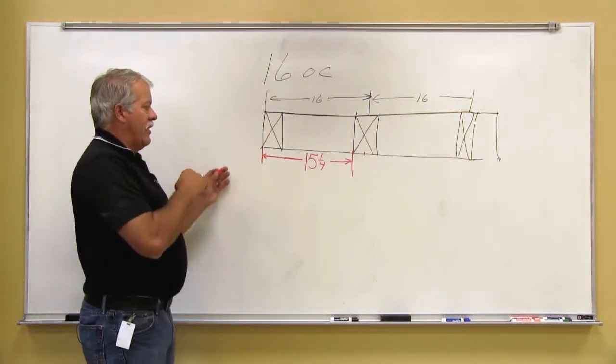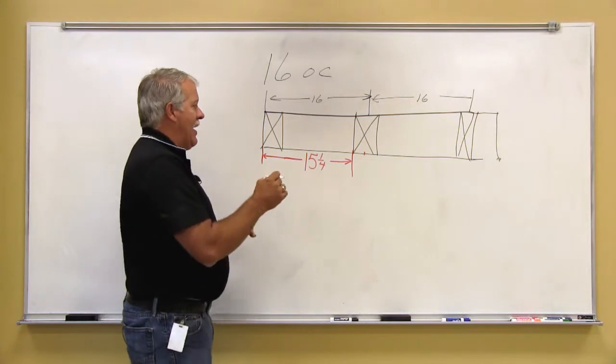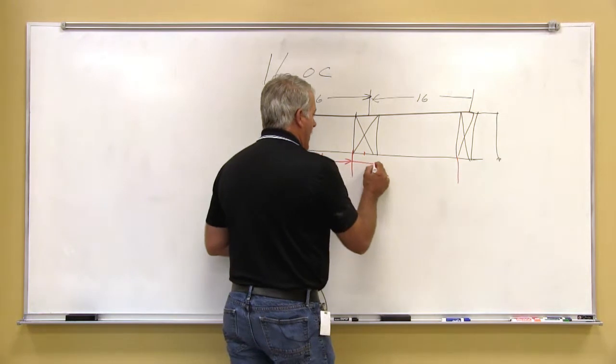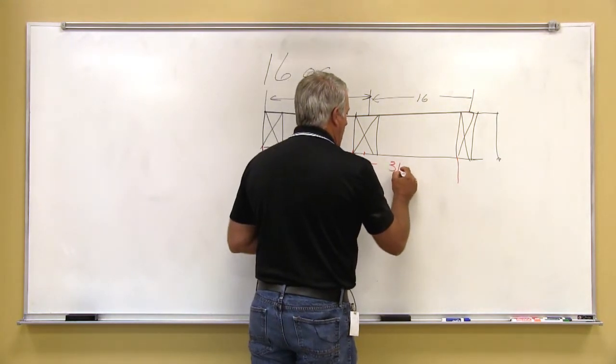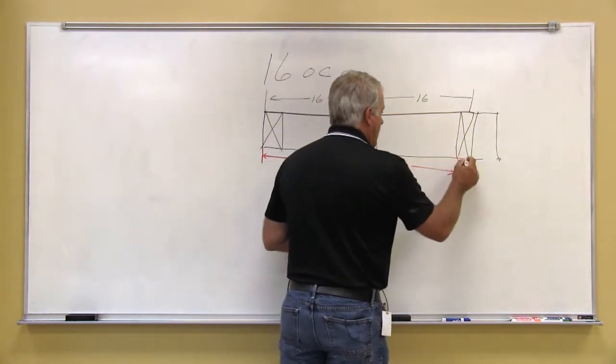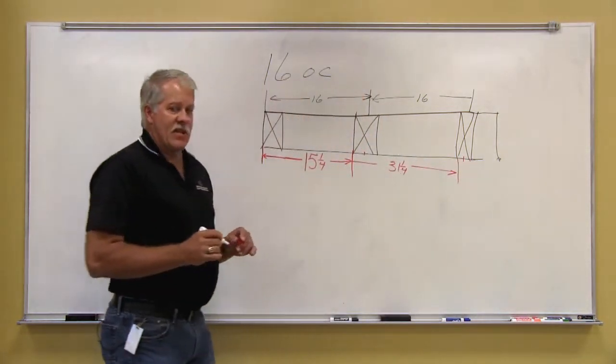So if I continue to draw this layout the way it is, my next mark to my next stud will actually fall at 31 and a quarter, so that 32 will land in the center of that stud.